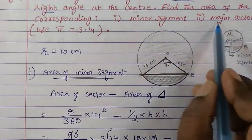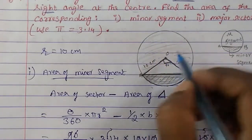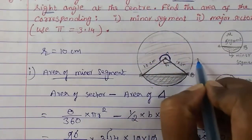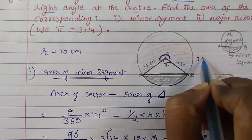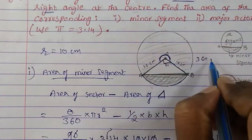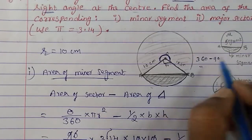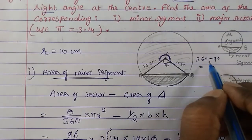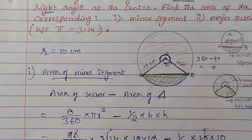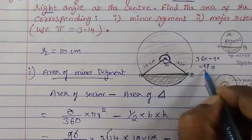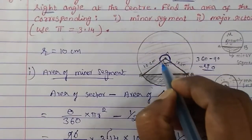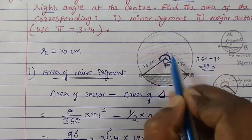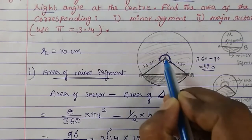Now we have to find the area of the major sector. The angle for the major sector = 360° − 90° = 270°. So theta for the major sector is 270°.